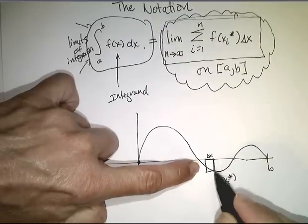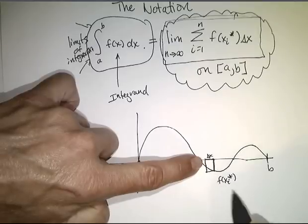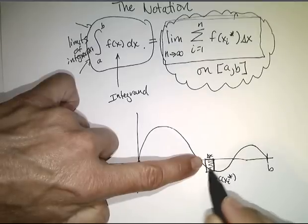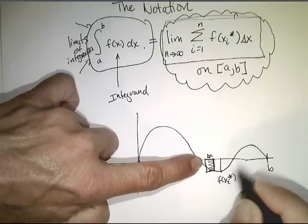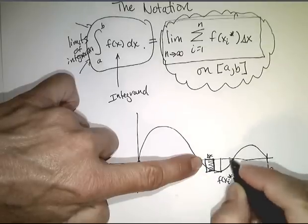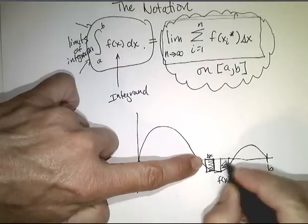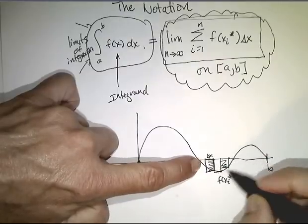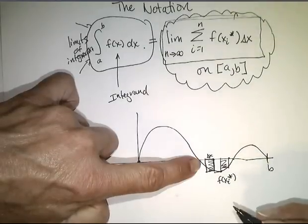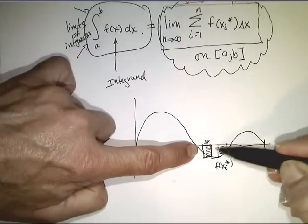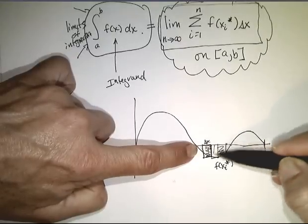So, this product, delta x times f of xi star, is a negative amount. And, as a matter of fact, all the rectangles here are going to be a negative amount. And, any time the function dips down into below the x axis, those rectangles will produce a negative amount.